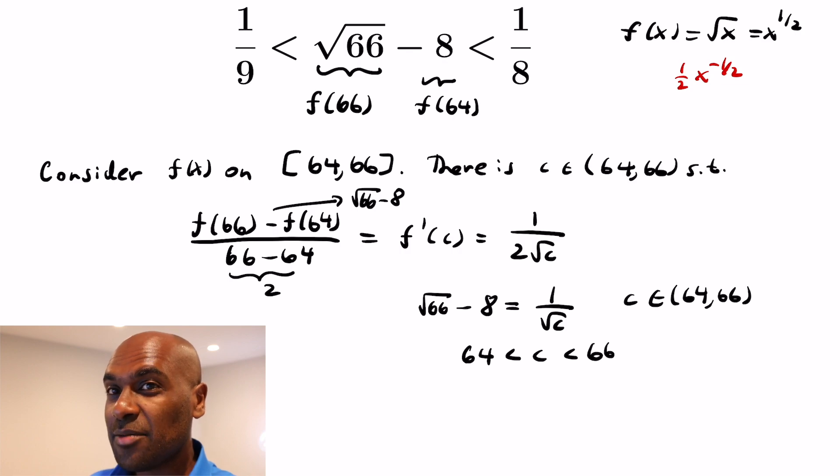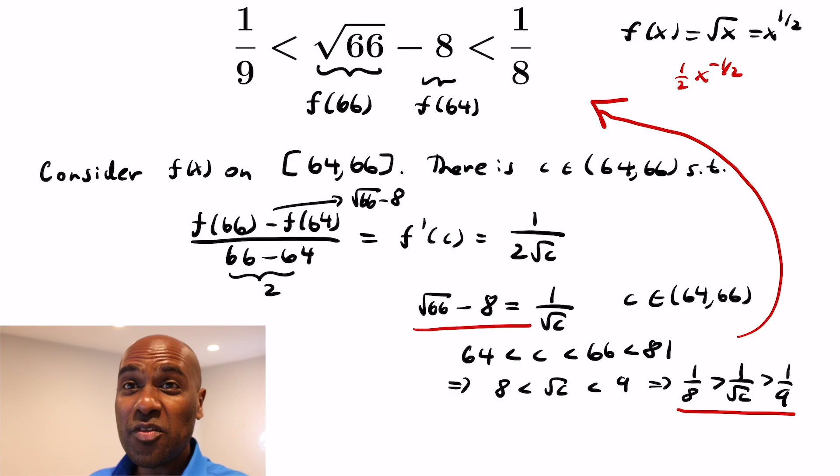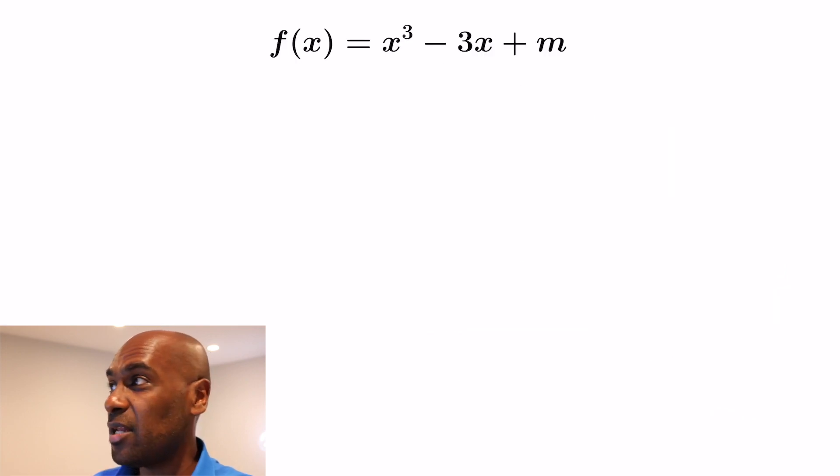Okay so can we use that somehow to estimate 1/√c? Well 66 is bounded above by 81. So 8 < √c < 9. And reciprocating we get 1/8 > 1/√c > 1/9. And since 1/√c is the quantity we're interested in the middle, when we take these two underlined expressions together, we get exactly the inequalities that we wanted in the first place. So this is just one example of how you can estimate differences of the same functions using the mean value theorem. You can do this with a wide range of expressions, not just with the square roots that we had, but if you see any differences whatsoever. It's a very interesting and useful strategy.